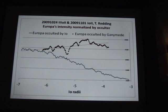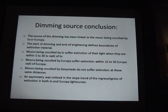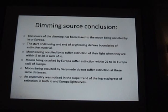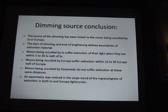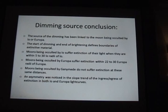So yet another independent method showing that the source of the dimming is the moon being occulted by Io. The source of the dimming has been linked to the moon being occulted by Io or Europa. The start and end of the dimming defines boundaries of extinction material. Moons occulted by Io suffer extinction of their light when they are within 5 to 30 Io radii.